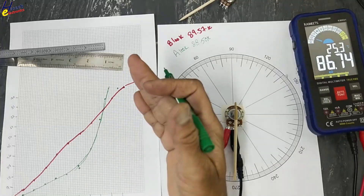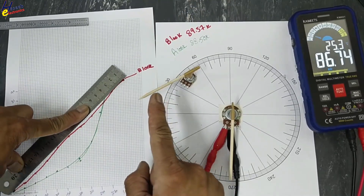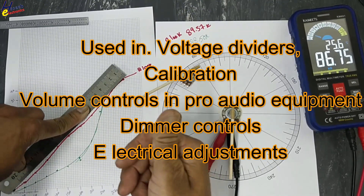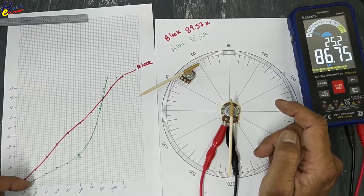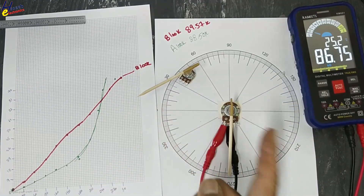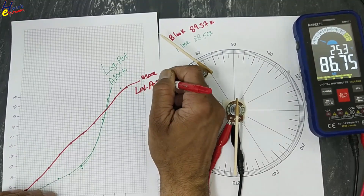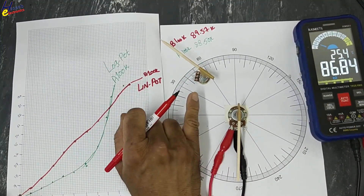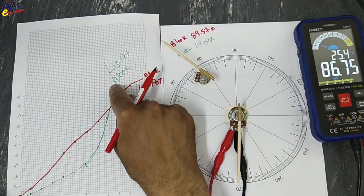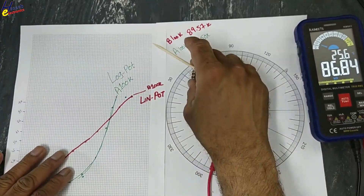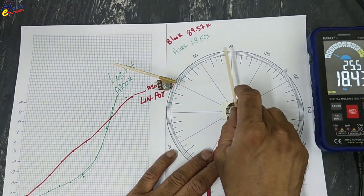When we say linear potentiometer, its resistance increases linearly. At each degree of rotation, directly proportional resistance is provided at the output. But when we say log pot, it provides resistance in a logarithmic curve — not proportional to shaft position. This is B 100K linear potentiometer versus A 100K log potentiometer. If this video is informative for you, give a thumbs up. If you have any questions, please write in the comments. Thanks for watching. Assalamu alaikum wa rahmatullahi wa barakatuhu.